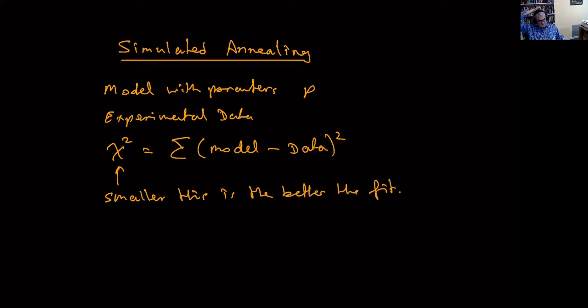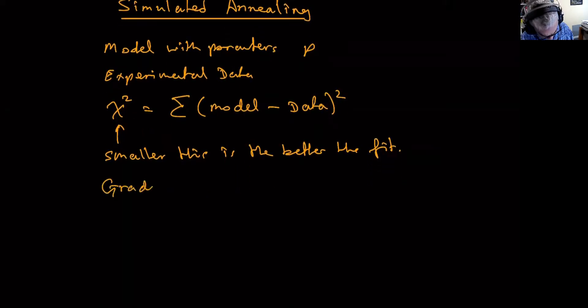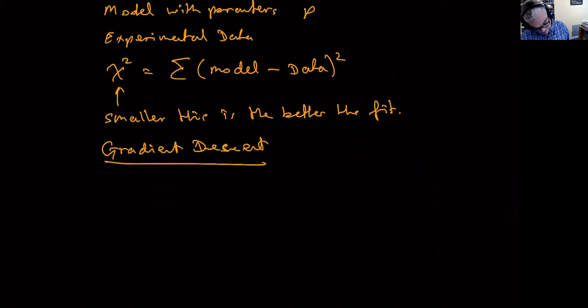And the objective was the smaller this is, the better the fit. That was the objective. And the method we described first was something called gradient descent. Essentially what that involves, let's say we had a one-dimensional system with one parameter, and we plotted the chi-squared. If we plotted the chi-squared, we might get something that looks like that. So this direction is the chi-squared, and this direction is the parameter. This clearly is the minimum, so this is the value, this is the best parameter, best p.